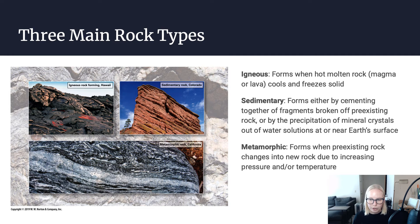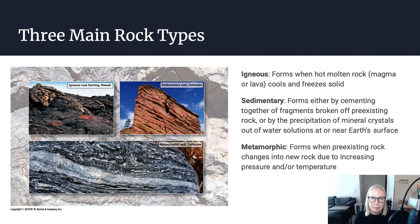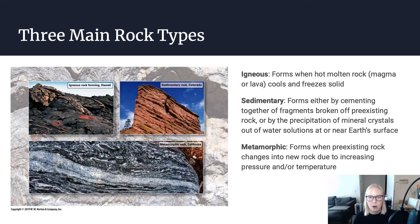Finally, we have metamorphic rocks. Those form when you have a pre-existing rock — either an igneous rock, a sedimentary rock, or a metamorphic rock — that has been reheated or put under higher pressures. You can think of the word metamorphism like a butterfly: it's like a caterpillar turning into a butterfly, one rock being transformed into a new kind of rock. That's what we call a metamorphic rock — something that was pre-existing but has now evolved into something slightly different. You can take any rock and metamorphose it: an igneous rock, a sedimentary rock, and you can also take a metamorphic rock and re-metamorphose it.